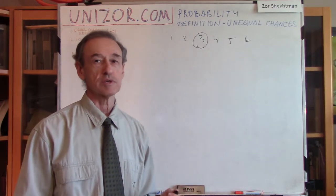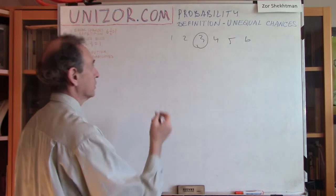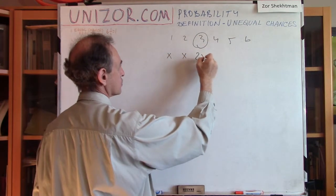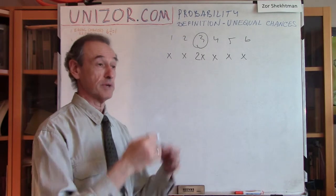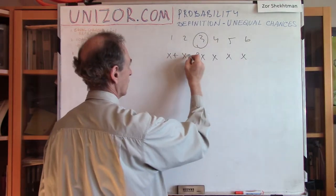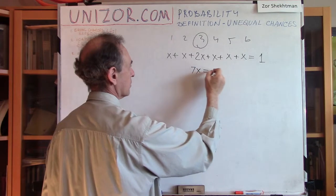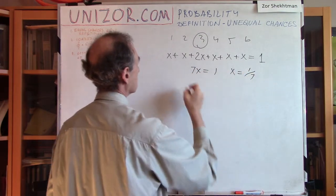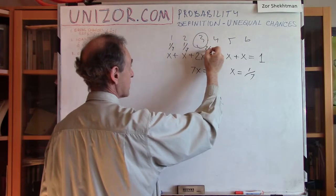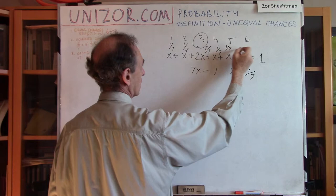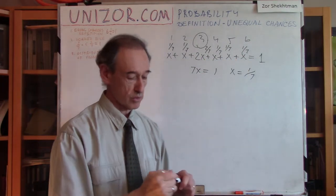What is the distribution of probabilities in this case? Let's solve the problem. If the probability of each normal side is x, and the loaded side has probability 2x, then the total is 5x plus 2x equals 7x equals 1, so x equals 1/7. So the probability of each of the five normal sides is 1/7, and the probability of the loaded side is 2/7. Checking: 5 sevenths plus 2 sevenths equals 1, as it should be.